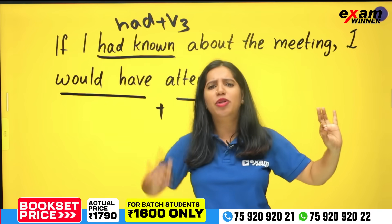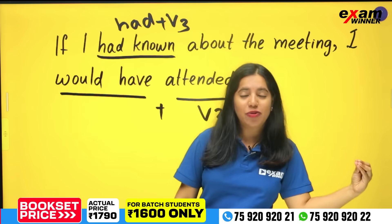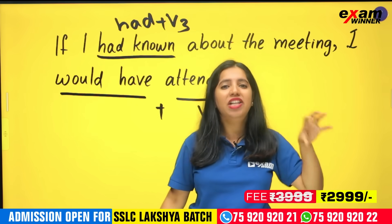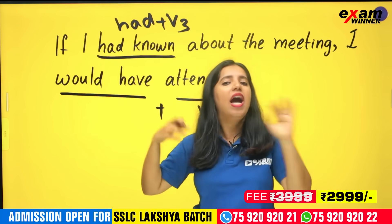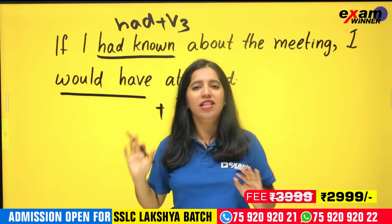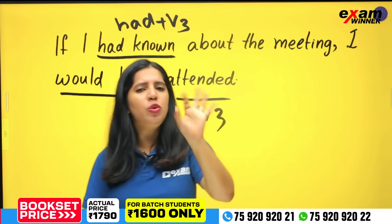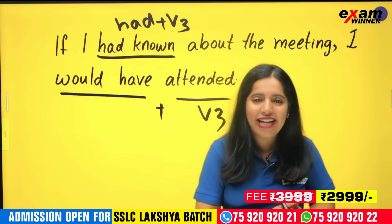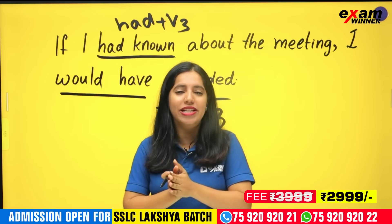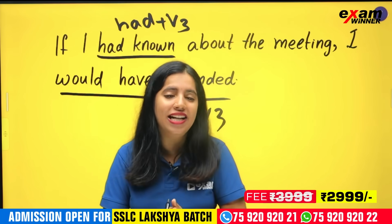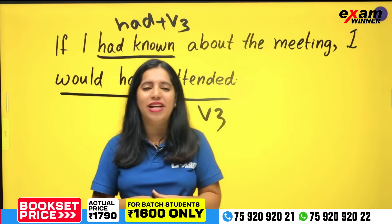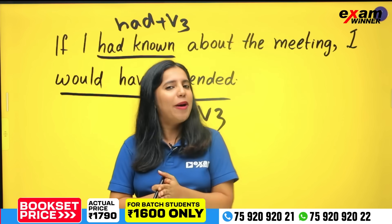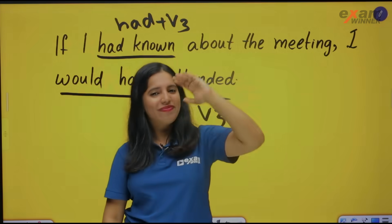We will learn the present tense with will plus V1 for the first conditional, past with would plus V1 for the second conditional, and past perfect had V3 with would have plus V3 for the third conditional. You will learn these three things. If you are interested in this video, please comment on this topic. Please subscribe to the channel. See you in the next video. Bye!